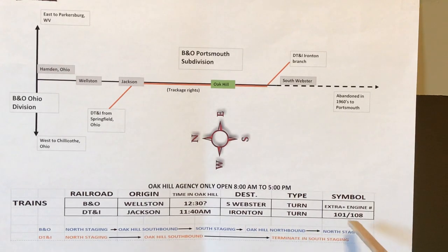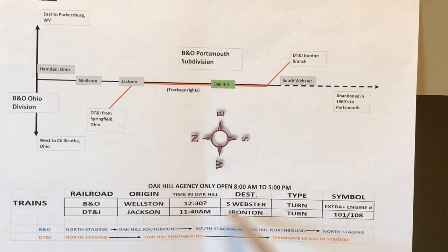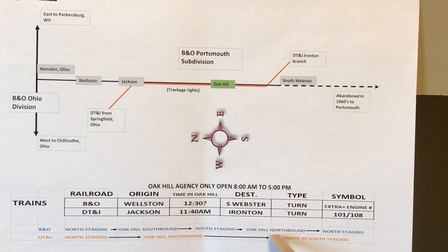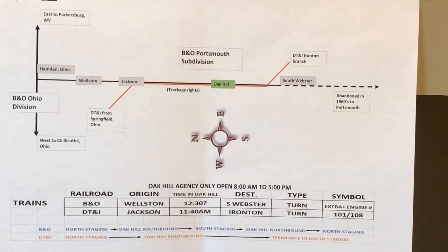The B&O trains were typically extras — called extra 65, 62, whatever the engine number was. The DT&I train on the B&O timetable was 101 going south and 108 coming back north. So to summarize how I'm going to operate: B&O goes from north staging to Oak Hill, switches the trailing point switches, goes to south staging, I fiddle with the cars, then runs back northbound through Oak Hill doing that switching, and terminates at north staging. When I run the DT&I, it goes from north staging through Oak Hill southbound — no work, just a run-through — and terminates in south staging. That's just for show.